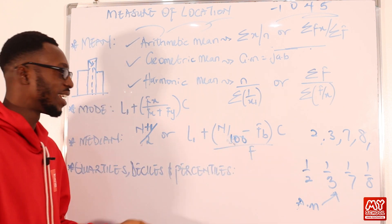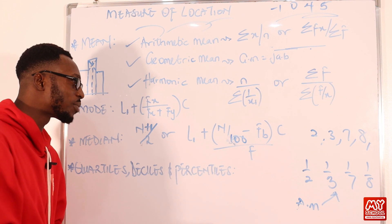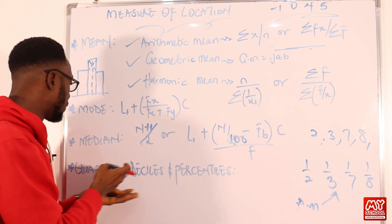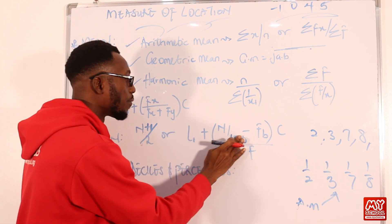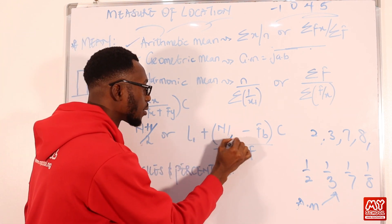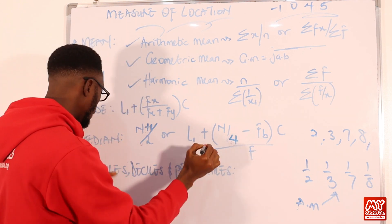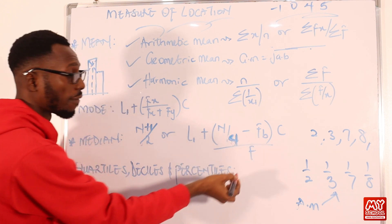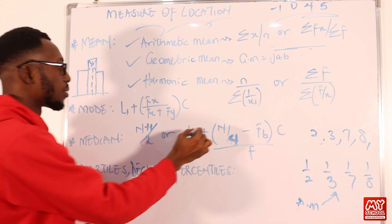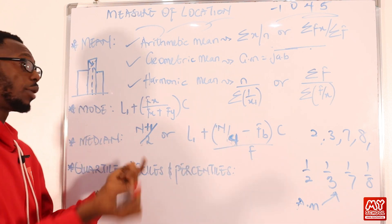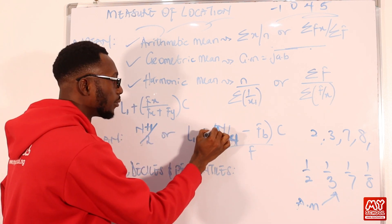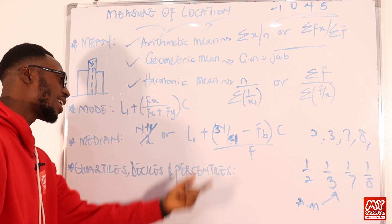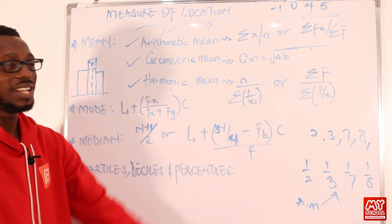Depending on what you are looking for: the first quartile uses n/4; the third quartile uses 3n/4. Your indicator number tells you which position to look at, and you work around where it falls to get your solution. The formulas are very straightforward once you understand the pattern.